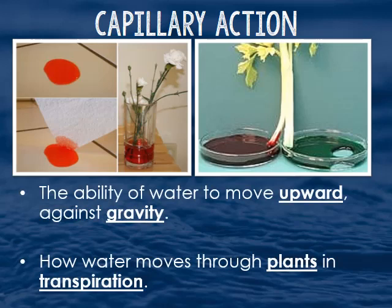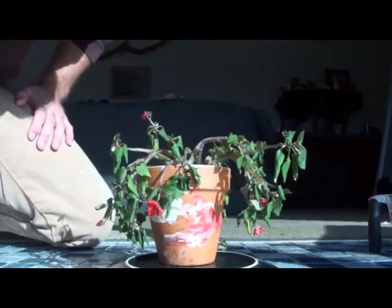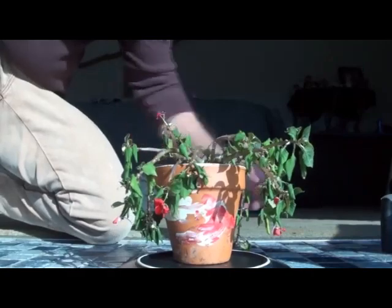Capillary action is the ability of water to move up against gravity. This is how plants move water through their stalks, like you see with celery. They move it up in the process of transpiration. I'll give you a little example of capillary action and how nature gets water into the tops of its plants and how plants are supported hydraulically through capillary action.